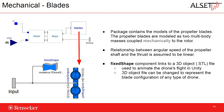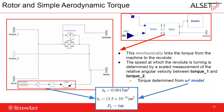Going back to the propeller, we have our blade model — similar to the chassis model, using two single body masses to model the blades, plus a fixed shape component to model the blades as a separate 3D object when animating the drone. We assume the relationship between the angular speed of the propeller shaft and the thrust is linear. For the rotor, this mechanically links the torque from the machine to the revolute joint to spin the blades. The speed is a scaled measurement of relative angular velocity between torque 1 and torque 2 from the machine, and the aerodynamic torque is determined from a simple omega-squared model.